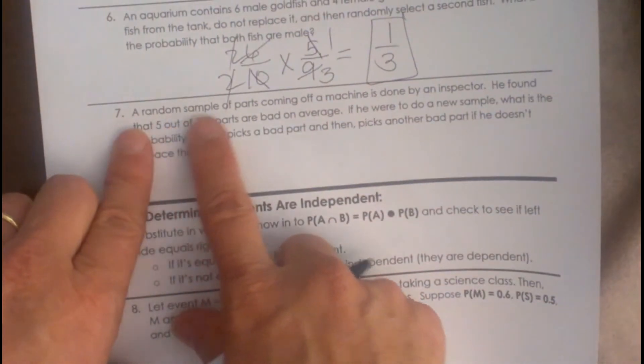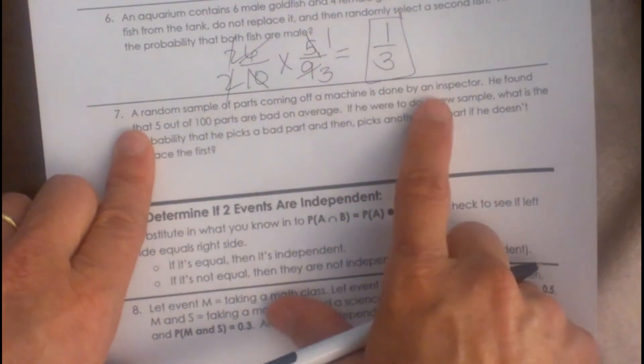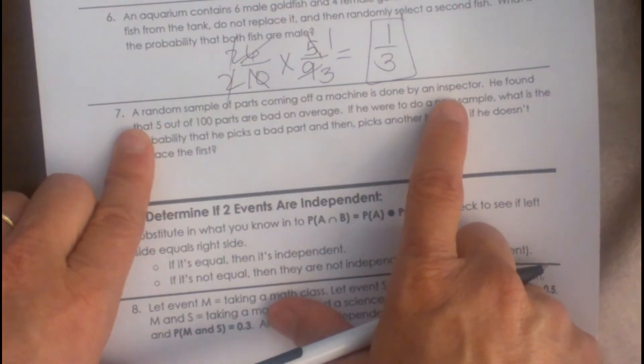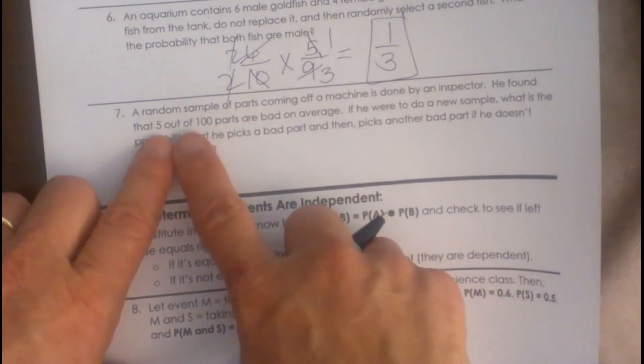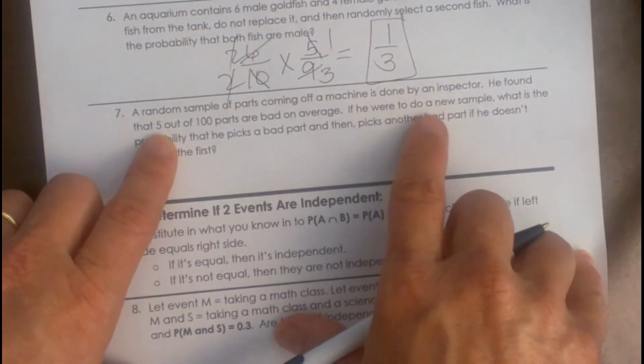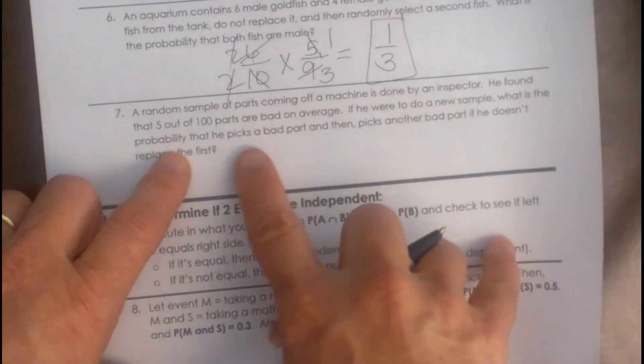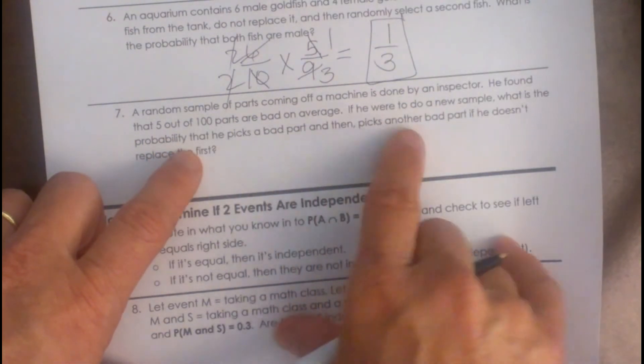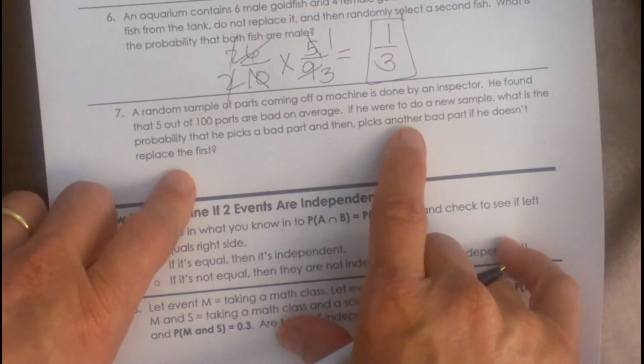A random sample of parts come off a machine and is checked by an inspector. He found 5 out of 100 parts are bad. If he were to do a new sample, what is the probability that he chooses a bad part and then picks another bad part if he does not replace the first one?